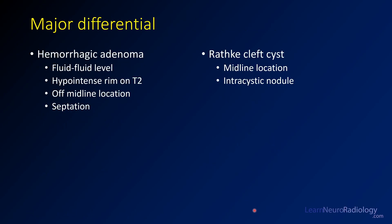The major differential in this case is whether it's a pituitary adenoma with hemorrhage or a Rathke's cleft cyst. Features favoring adenoma include fluid-fluid levels, off-midline location, and septation. Rathke's cleft cysts tend to have a midline location. There's also a classic intracystic nodule — a small nodule along the margin — which is classic for Rathke's cleft cyst.